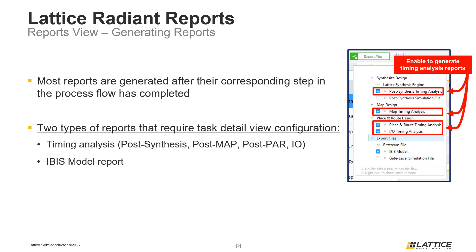The second type of report that requires selection to generate are IBIS models. To generate an IBIS model during the export file stage of the project flow, enable the IBIS model option in Radiant's Task Detail View. If this option is enabled, users will be able to view a report of the generated IBIS model in Radiant's Reports View.